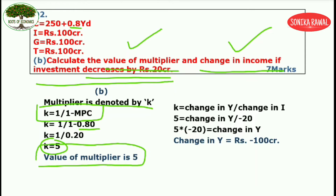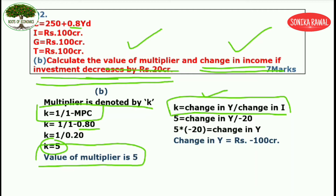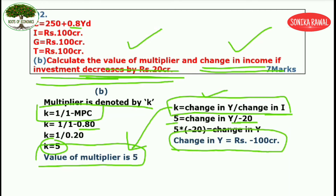Now we have to find how much income will change. Apply the multiplier formula: K equals change in Y divided by change in I. We have K as 5. Change in I is given as decrease by 20, so write minus 20. Solve the equation — the answer comes out to minus 100 crores. This means income is reducing by 100 crores. If you don't write the minus sign, the answer will be wrong.